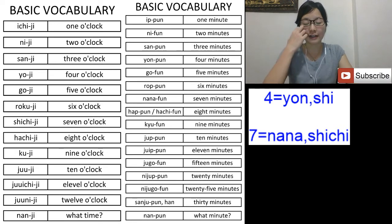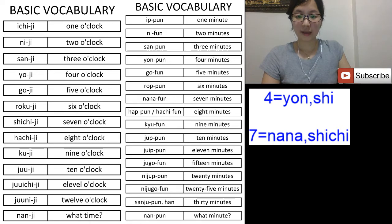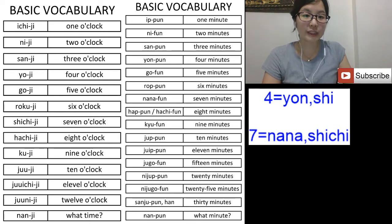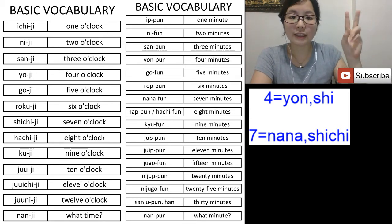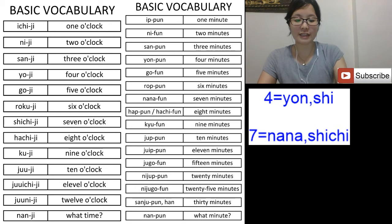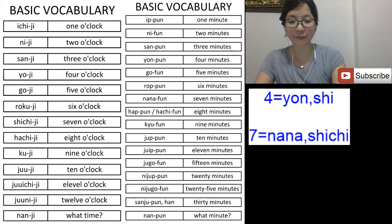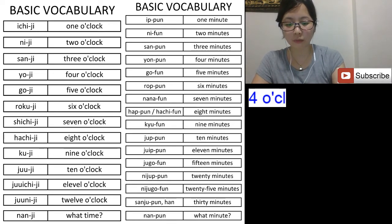When you combine a number together with 'ji' — ji means o'clock — so if I say 'ichi-ji' it means one o'clock, ni-ji, san-ji, yo-ji. For four o'clock we say 'yo-ji', not 'yon-ji'. Four o'clock is 'yo-ji'.